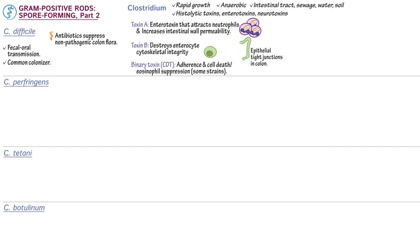The role of binary toxin in C. diff infection is uncertain. Some studies suggest that binary toxin increases bacterial adherence to host cells and promotes cell death, whereas others suggest that the toxin suppresses eosinophil activity. It's possible that the toxin has multiple virulence effects. C. diff infection acts on the colon, inducing a range of gastrointestinal issues, from mild diarrhea to severe colitis.